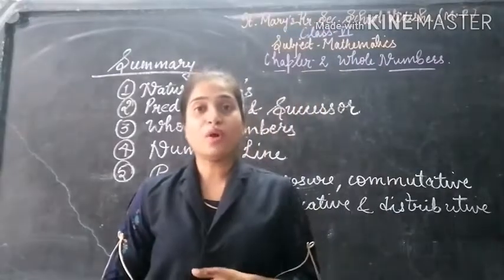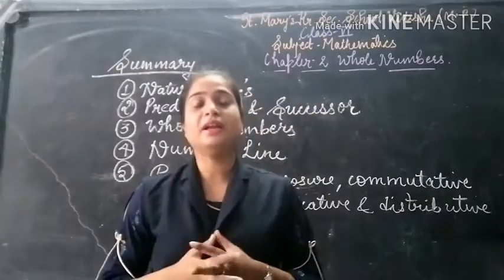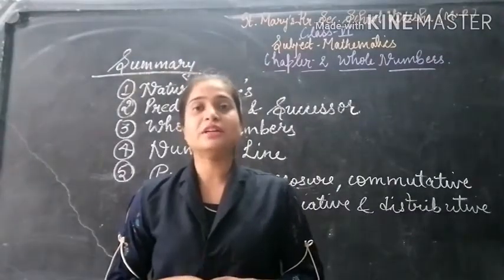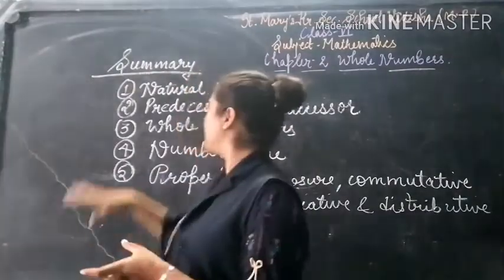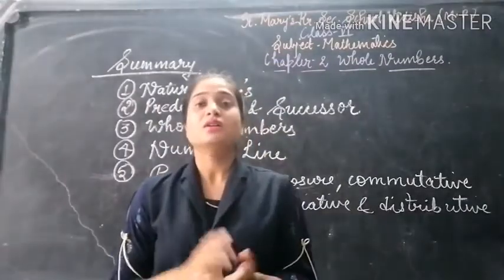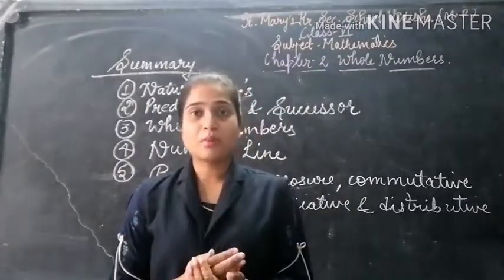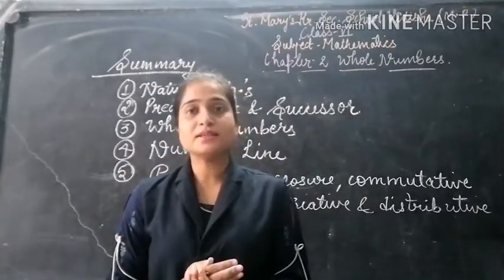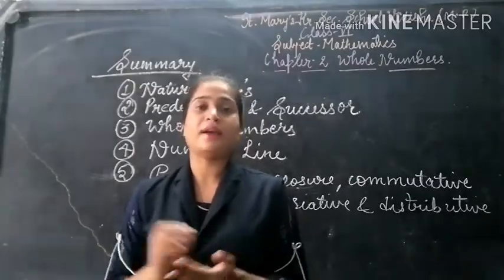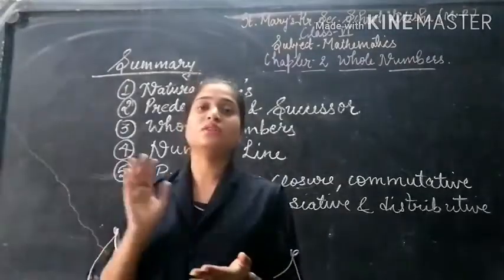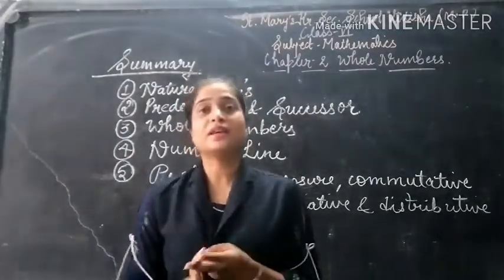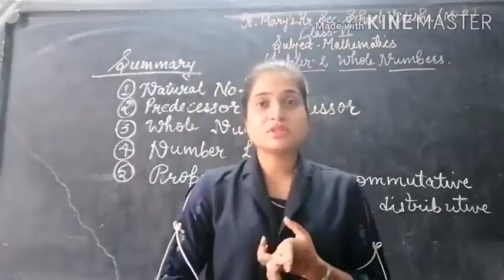Let us recall what we have studied in this chapter. The first thing we studied is natural numbers. The counting numbers are known as natural numbers: 1, 2, 3, 4, etc. These numbers are known as natural numbers.